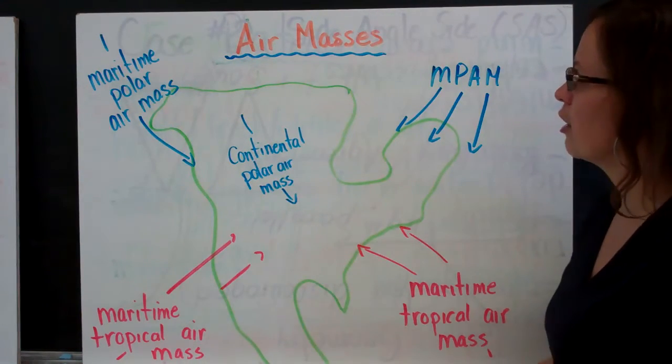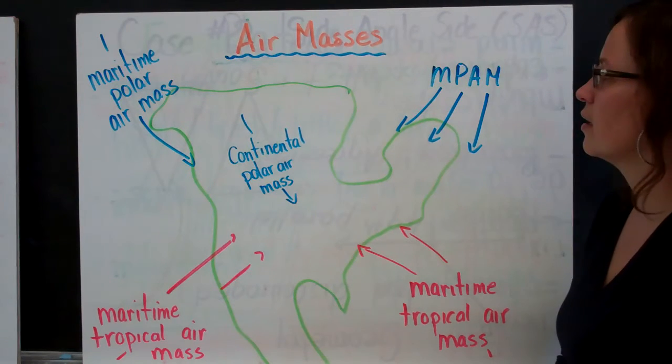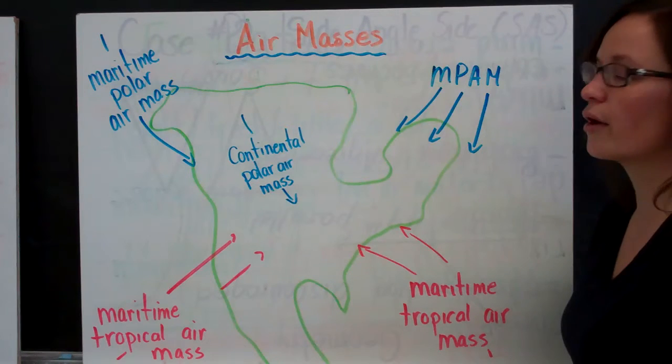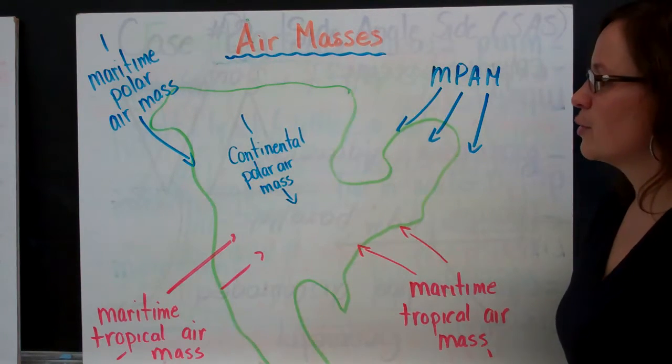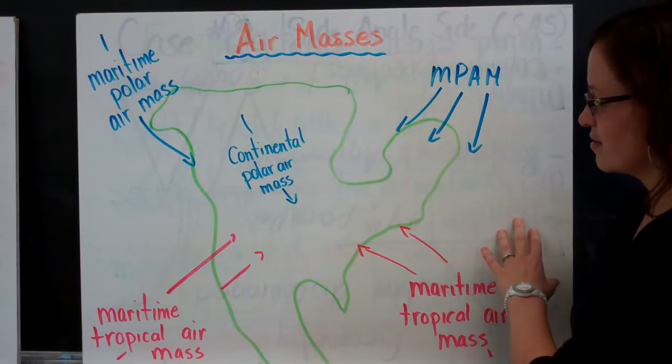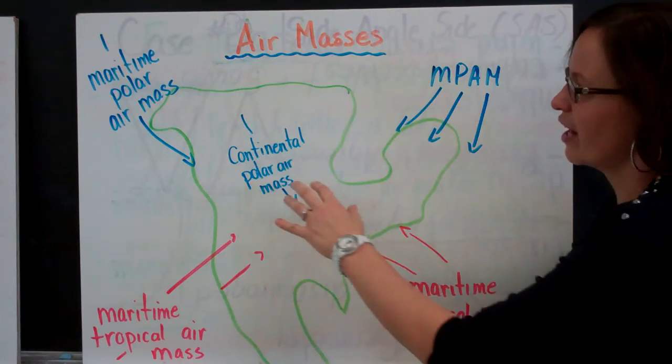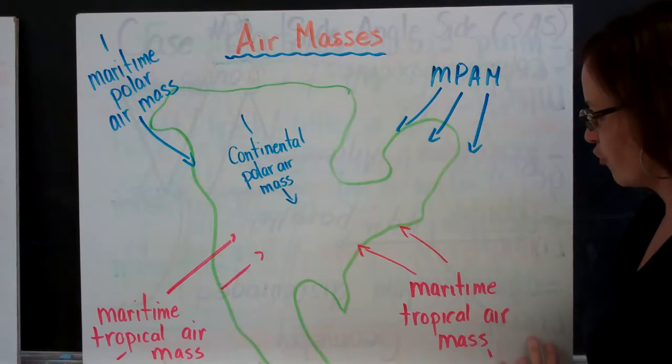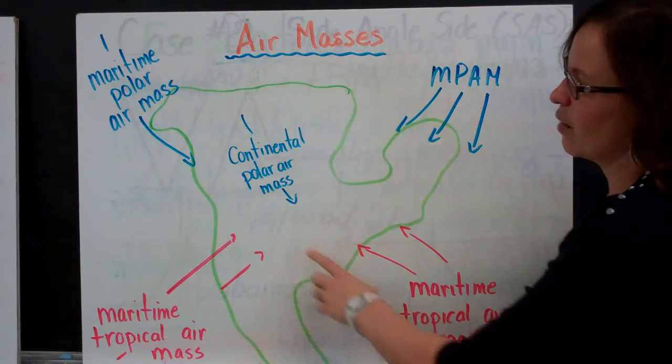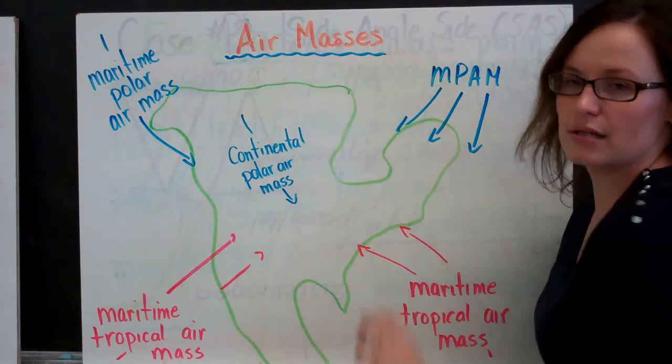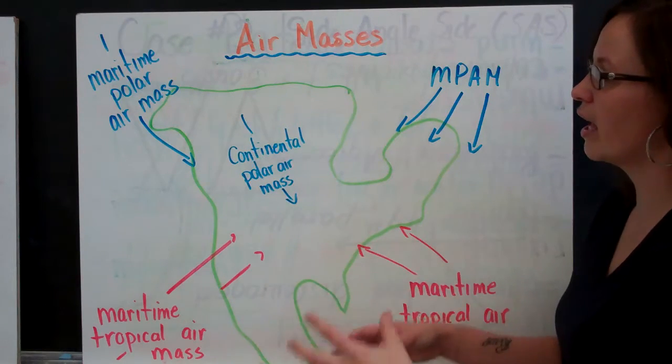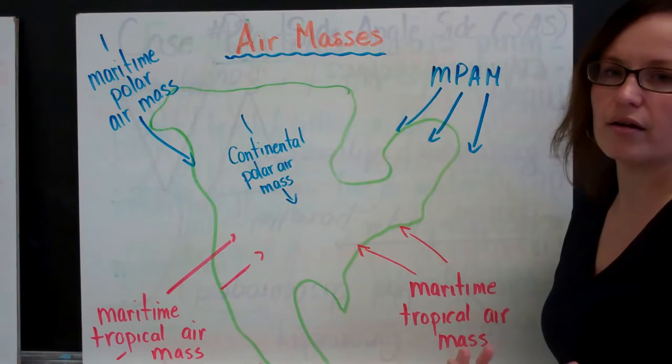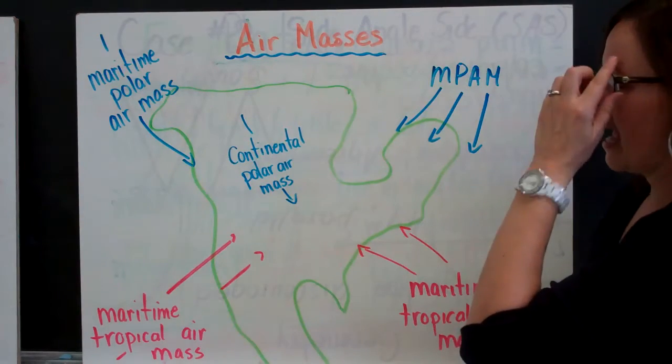So air masses are large volumes of air that have a similar temperature to where they originate. And you can have air masses that originate over water and you can have air masses that originate over land. So when they originate over water, they're called maritime. And when they originate over land, they're called continental. And depending on the region where they originate will determine their temperature and their makeup.